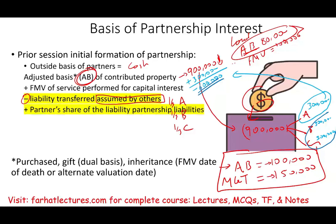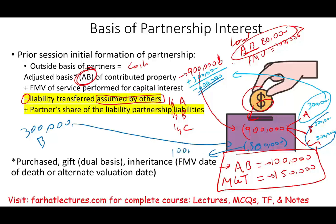Now let's assume another partner — Partner B — contributed a liability of $300,000. That liability is now inside the partnership. As a one-third partner (Partner A), you are responsible for $100,000 of that debt. Therefore, you increase your basis by $100,000 — your share of the partnership liability contributed by others. You have to be very careful when dealing with liabilities.